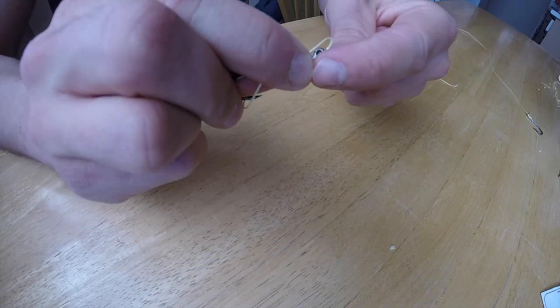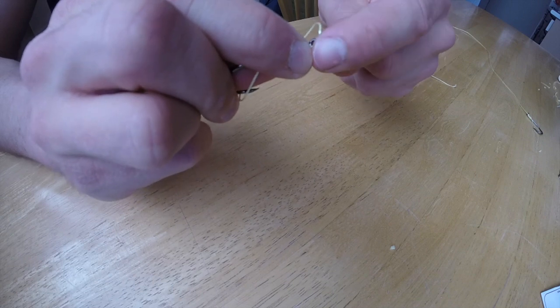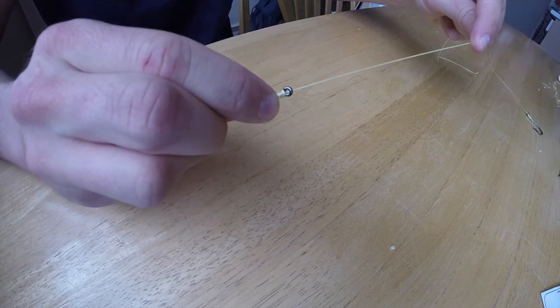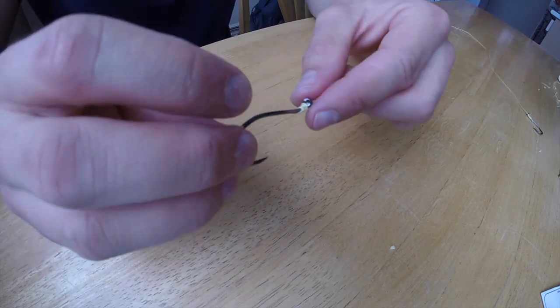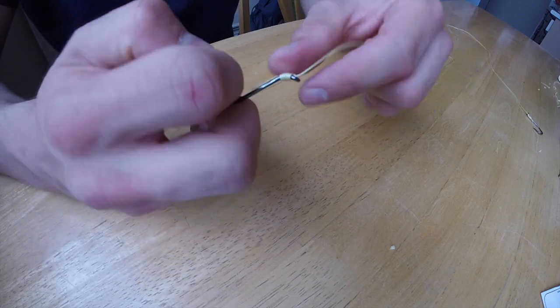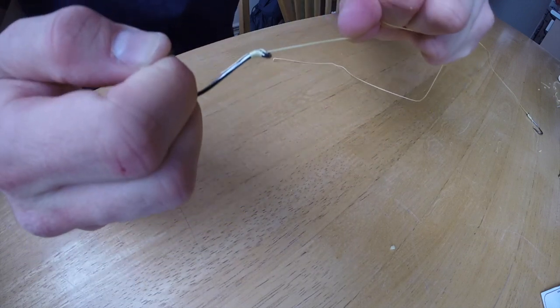Then you put your hand again on the wrapping, and you pull on the main end of your leader. You just pull that tight.